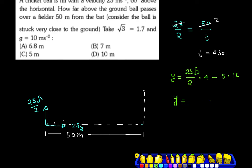Using root 3 approximately equal to 1.73, calculating 25 root 3 by 2 times 4 minus 5 times 16 gives us 5 meters. So the answer is 5 meters — that is how high above the ground the ball passes the fielder.